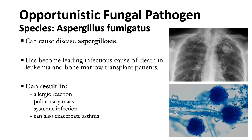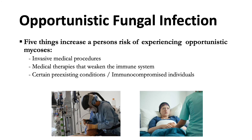Another opportunistic fungal pathogen is Aspergillus fumigatus, which causes aspergillosis — one of the leading infectious causes of death in leukemia and bone marrow transplant patients. It can result in allergic reaction, pulmonary mass, systemic infection, and can also exacerbate asthma. The things that increase a person's risk of experiencing opportunistic mycosis are: invasive medical procedures; medical therapies that weaken the immune system, like corticosteroids and chemotherapy; and certain pre-existing conditions such as cancers, diabetes, and AIDS.